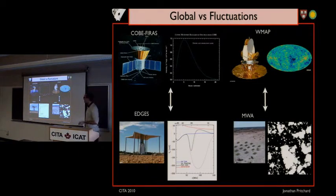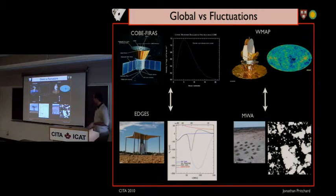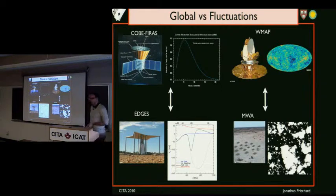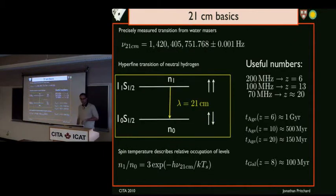There are two ways that one can make use of the 21-centimeter signal, which have analogies to the CMB. You can make a spectral measurement as a function of frequency — analogous to what COBE did measuring the black-body spectrum — using a single dipole experiment to measure the brightness as a function of frequency. Or you can look for fluctuations, as WMAP has been very successful at looking for temperature fluctuations. So I'll talk about both of these approaches.